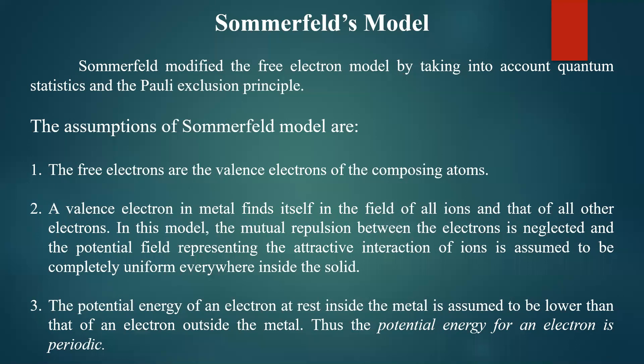Electrons experience the electric field due to ions and other electrons. But the mutual repulsion between electrons is neglected because that repulsion is smaller in magnitude, whereas the attractive interaction between electrons and ions is more and is observed to be uniform.